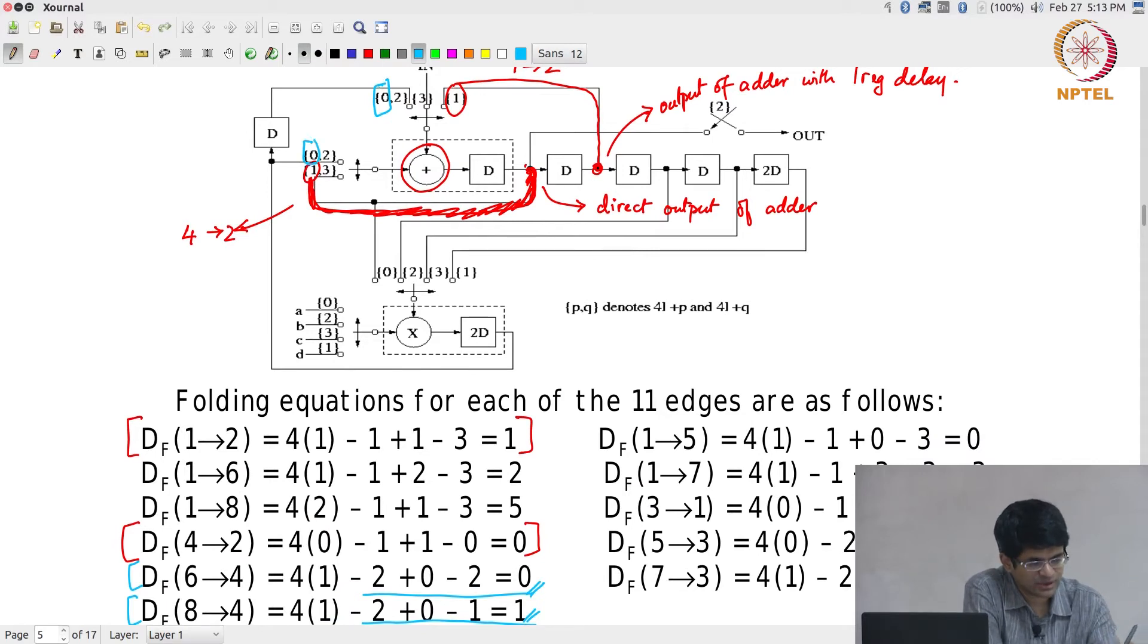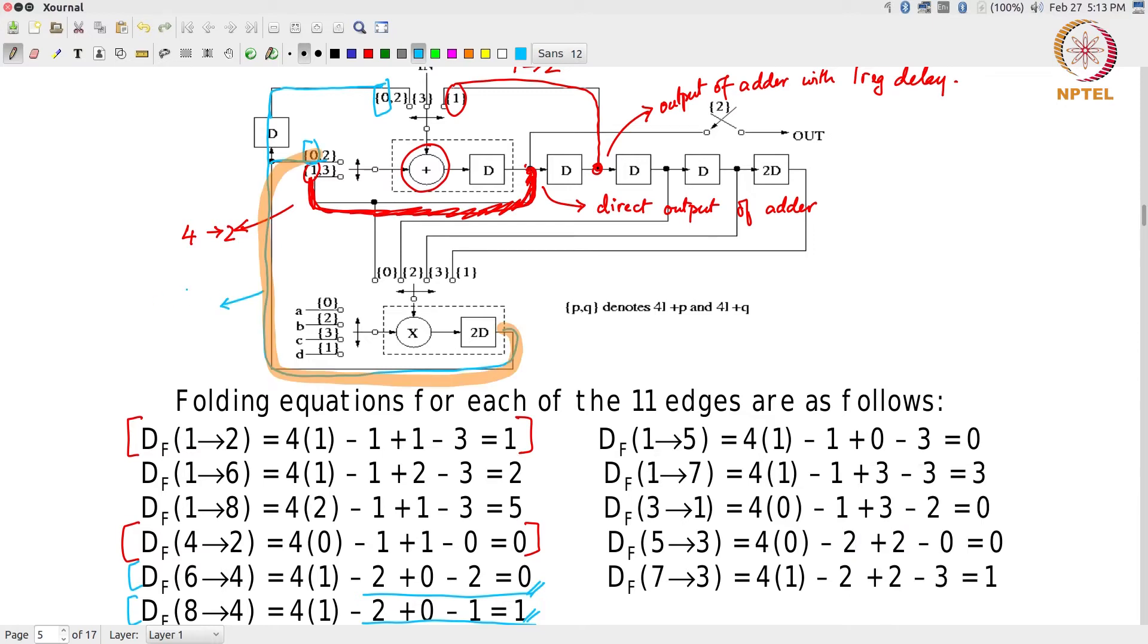Where do those edges come from? This one basically comes with one extra register out here from the output of the multiplier, whereas this one comes directly from the output of the multiplier. This in other words corresponds to the edge to 4 with DF equal to 0, whereas this other one corresponds to the edge from 8 to 4 with DF equal to 1, which is what I am seeing over here.